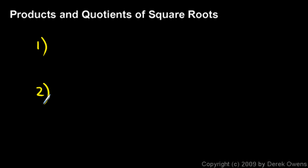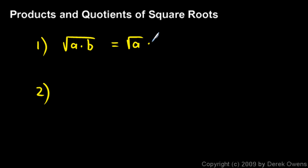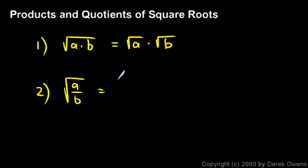I'm going to make two statements, and I'll show you that these are true. For any positive numbers A and B, these two statements are always true. The first is this: the square root of A times B is equal to the square root of A times the square root of B. And the same thing works with a quotient. If I have the square root of A over B, that's mathematically equivalent to the square root of A over the square root of B.